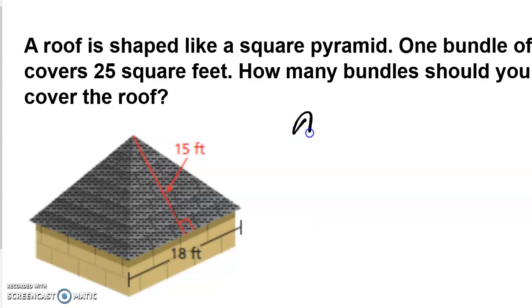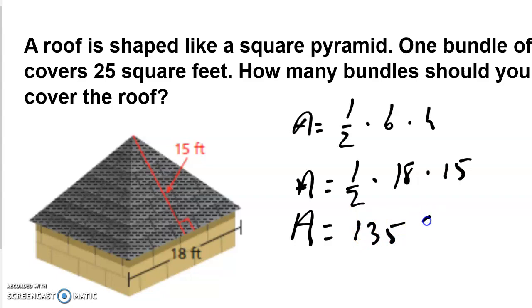So what I would do for this is if we do 1/2 times base times height, A equals 1/2 multiplied by 18 multiplied by 15, which means you're going to end up with an area of one side of the pyramid of 135 square feet. Now remember, we've got four of them. So if we multiply that by four, that's going to give us 540 square feet for the entire roof.